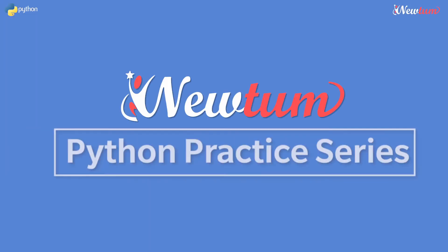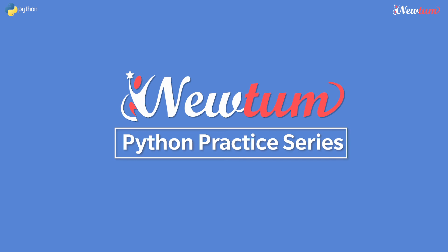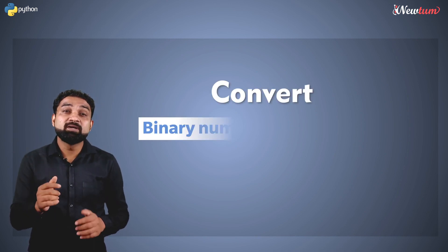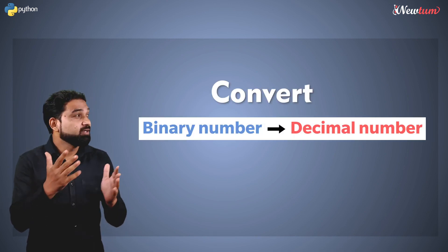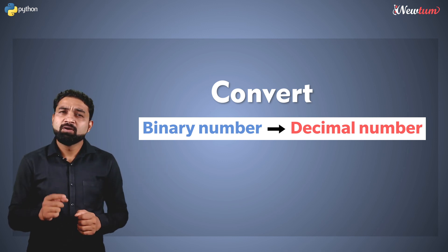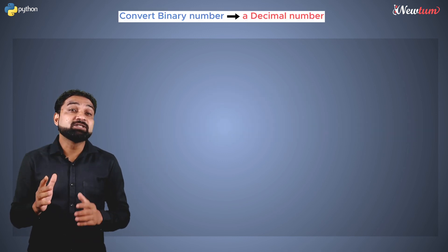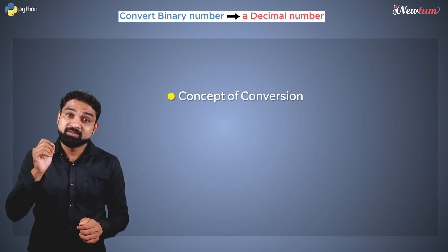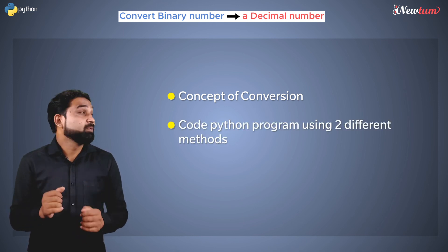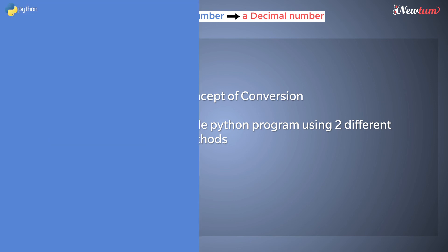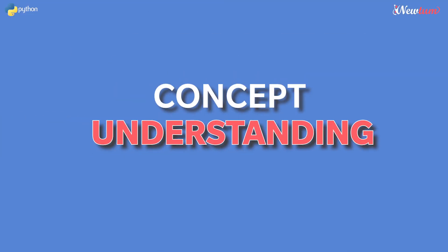Hello everyone, welcome to Newton's Python practice series. In this session, we will study how to convert binary number to a decimal number. First we will understand the concept of conversion. Then we will code the program in Python using two different methods. Let's start with the concept.